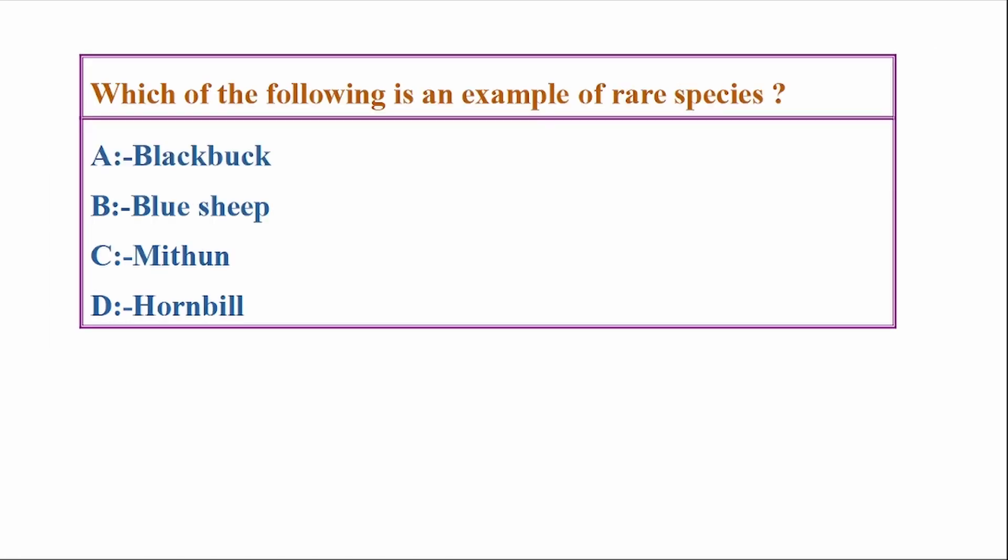Which of the following is an example of a rare species? Options: black buck, blue sheep, marten, hornbill. Answer: Option D, hornbill.